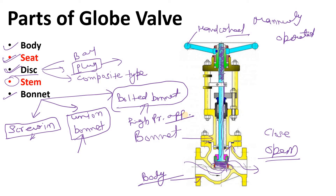So these are the main parts of the globe valve. The body, seat, disc, and stem are very important, and the bonnet is also important. You should know about these parts and their function.